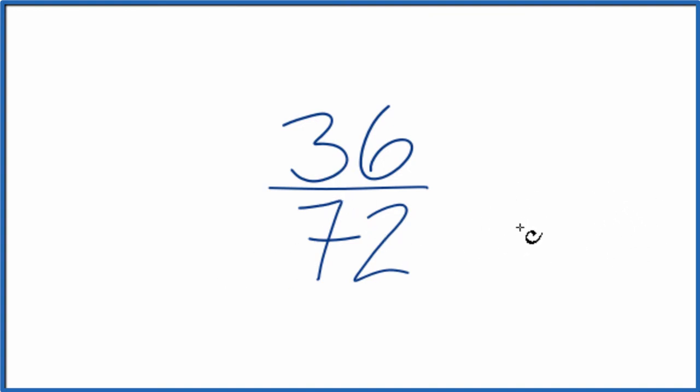To do that, we need to find a common factor, something that goes into 36 and 72. And we're looking for the greatest common factor.